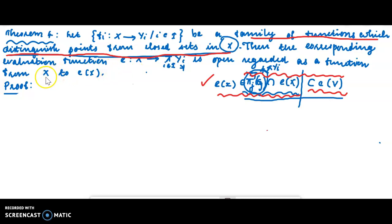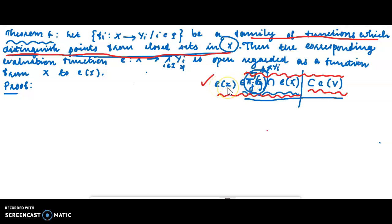Here the function is from X to E of X. When we consider open sets, open sets are in the relative topology of E of X, relativized from the product topology — the product of Y_i. Keeping in mind that concept, we have to prove that E of X, as an element of pi_j inverse of G_j intersection, with V being a neighborhood of each of its points.